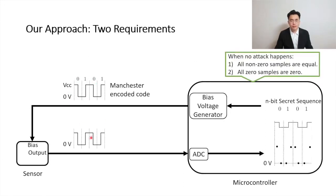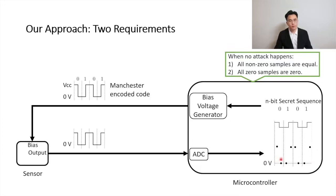Next, the ADC digitizes the sensor output in each clock cycle into two samples. One sample is obtained when the sensor is biased at the high voltage, and it has a non-zero value — we call this the non-zero sample. The other sample is obtained when the sensor is off, and hence it has a value of zero volts — we call this the zero sample. When no attack happens, the digitized sensor output satisfies two requirements: firstly, all non-zero samples are equal; secondly, all zero samples are zero. If an attacker violates any one of these two requirements, she will be detected immediately.